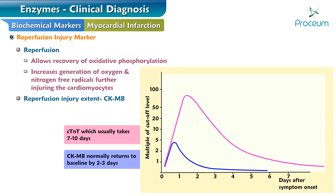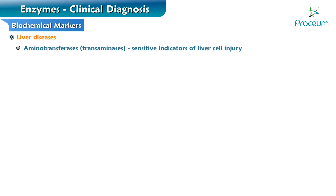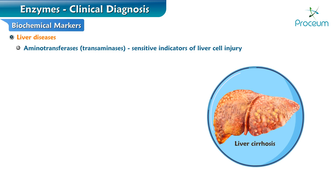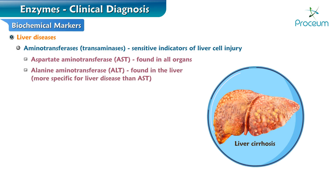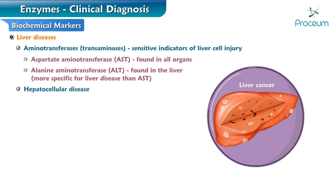Let's consider the enzyme profile for liver diseases. Aminotransferases, or transaminases, are sensitive indicators of liver cell injury. Aspartate aminotransferase, or AST, is found mostly in all organs. Alanine aminotransferase, or ALT, is found primarily in the liver and is therefore a more specific indicator for liver disease than AST. In hepatocellular disease, ALT elevation is slightly higher than or equal to AST, so the AST-to-ALT ratio is less than 1.